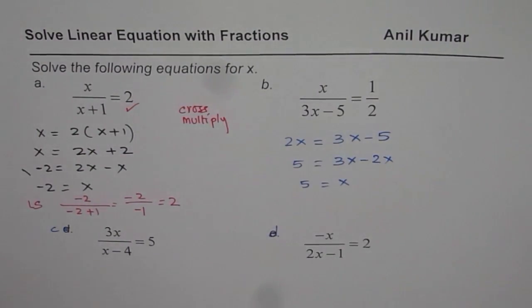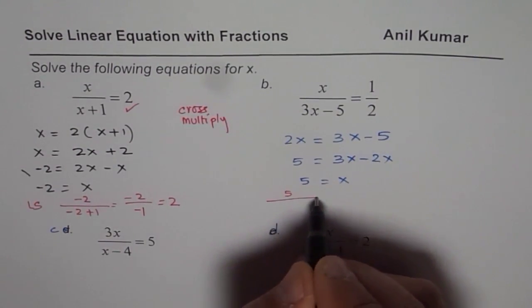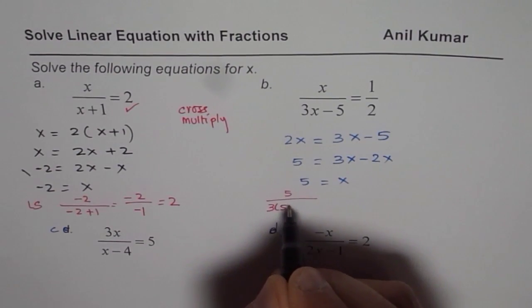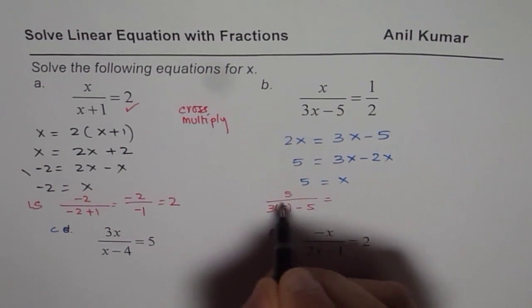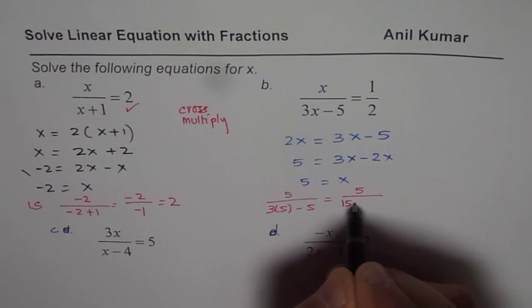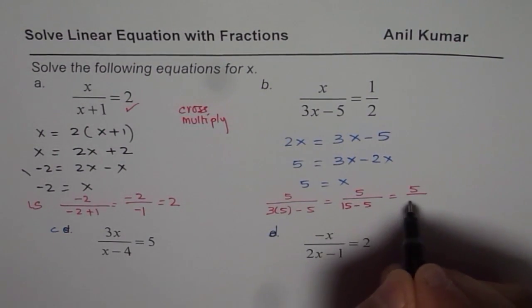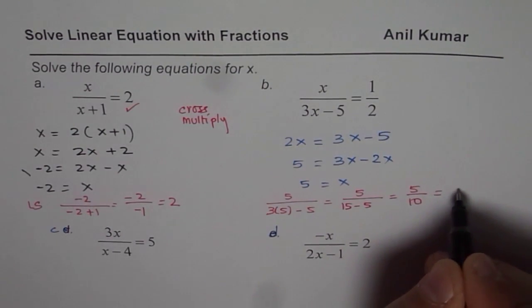You can actually check your solution also. x is 5. If I write 5 here, I get 5 divided by (3 times 5 minus 5). That gives me 5 divided by (15 - 5). So it is 5 divided by 10, which is indeed 1/2, which is the right side.